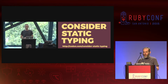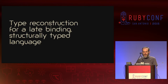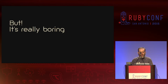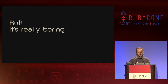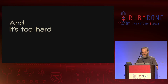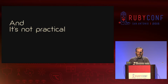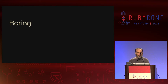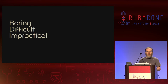I thought it would be a good idea to talk about what soft typing is and how it works — that really means talking about type reconstruction for a late-binding structurally typed language such as Ruby, and then working out how we deal with the inevitable failures. But then I wrote the talk and it turns out it's actually really boring. There's an awful lot of heavy academic theory in there. Not only is it boring, it's also really difficult — I'm not sure I could actually explain how soft typing works. And if that wasn't bad enough, it's also really impractical.